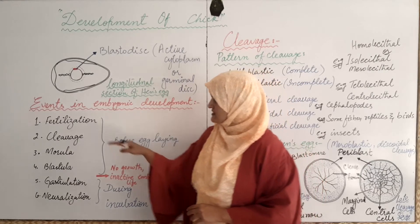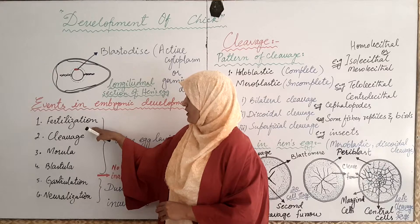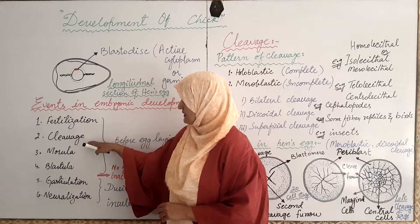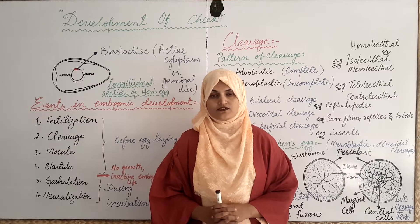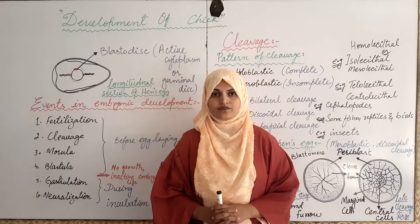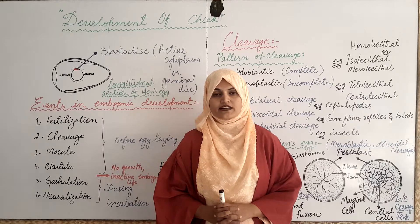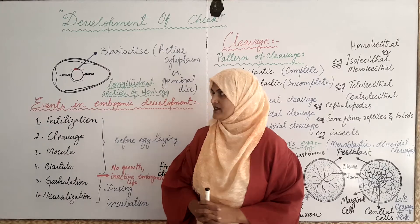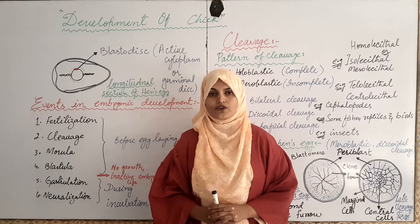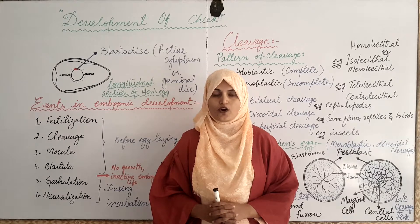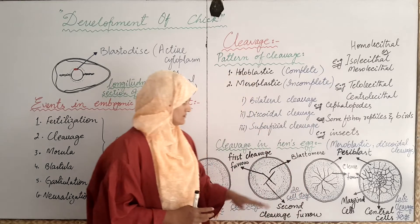When fertilization takes place in the egg of the hen, the second event starts which is termed as cleavage. What is cleavage? Cleavage is the repeated mitotic division that takes place in the blastodisk, in the result of which cells are formed which are termed as blastomeres.